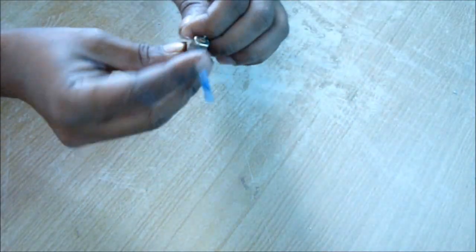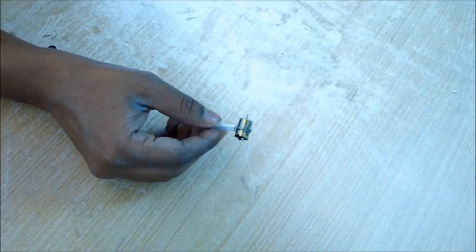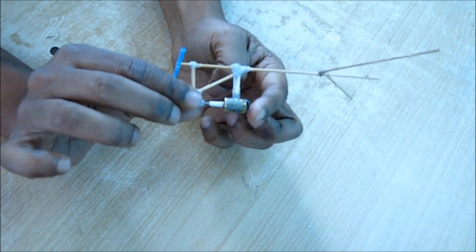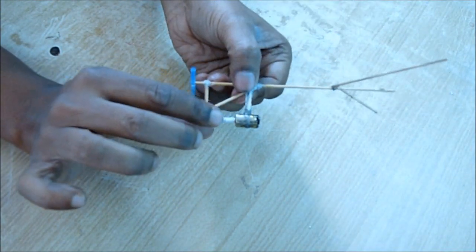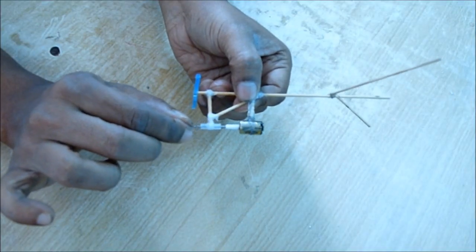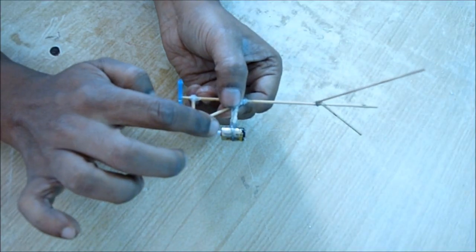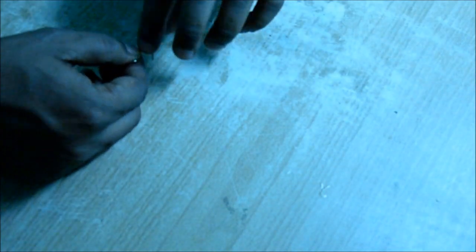This motor I'm going to fit in such a way that its axis exactly passes through the gel pen refill. Take the help of a wire, glue it, and tie it to the main body.